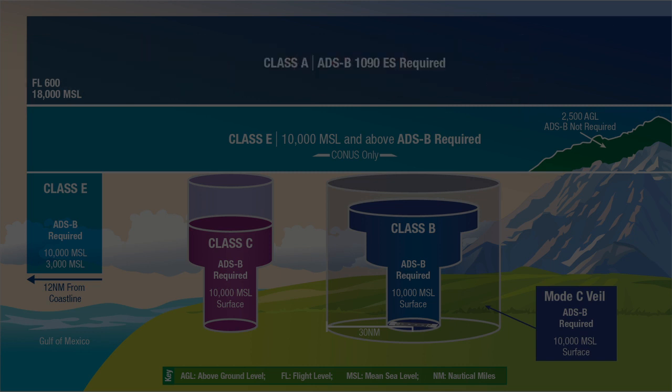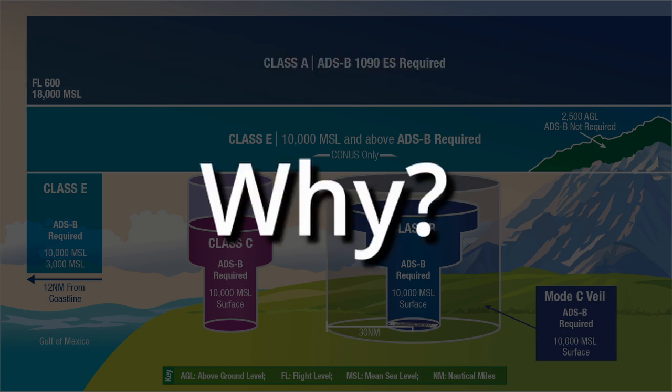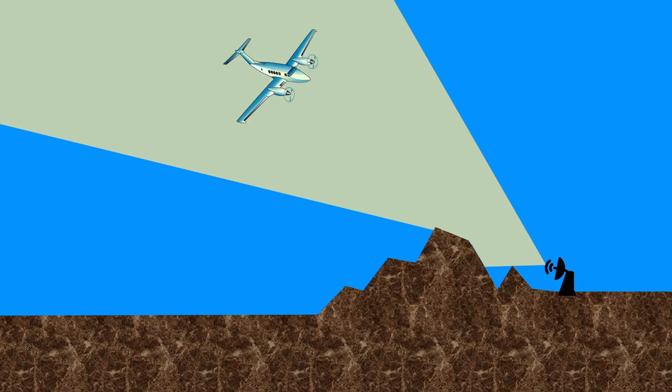So first we need to answer the question: why did the FAA decide to go with ADS-B? Well, the first major answer is to modernize air traffic control systems to be able to more accurately monitor the increase in air traffic.